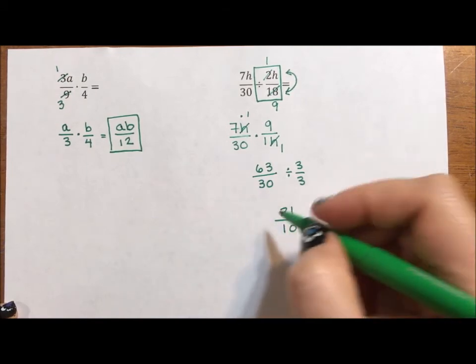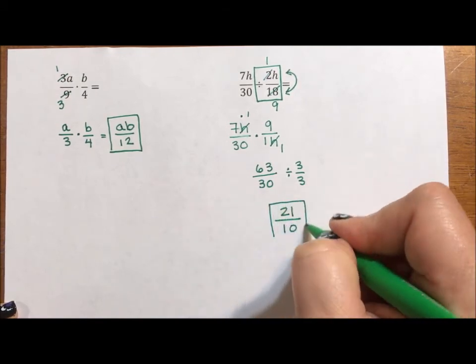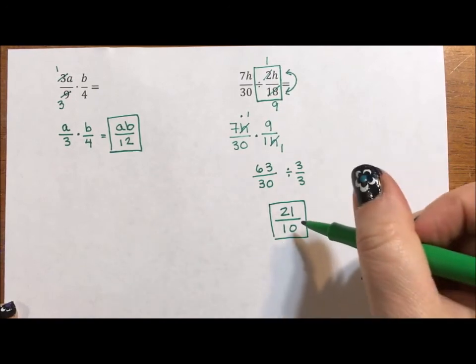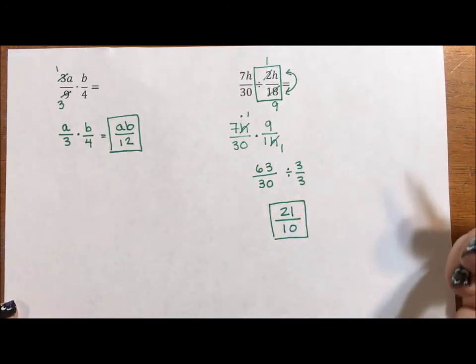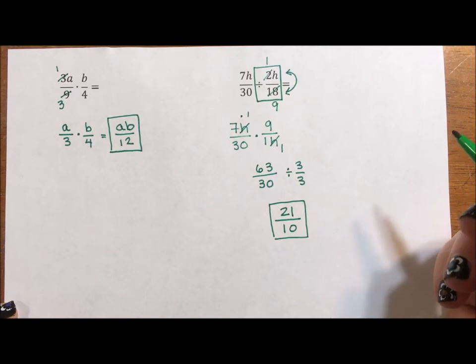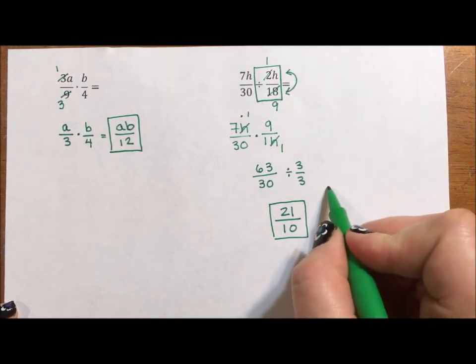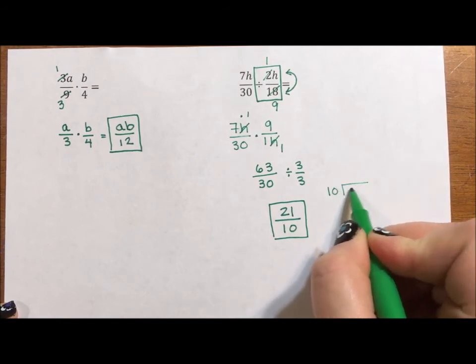Now to me, 21 over 10 is a great answer. I like my fractions reduced and improper. There are a lot of math teachers out there who would like you to write it as a mixed number. If that's the case, you need to take 10 and divide it into 21.